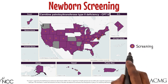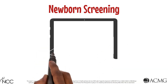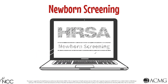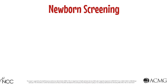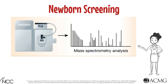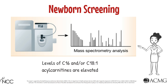Not all states in the United States provide newborn screening for CPT2 and CACT deficiency. A good resource for checking a state's newborn screening panel is the newbornscreening.hrsa.gov website. Screening for CPT2 and CACT deficiency is performed by examining levels of C16 and/or C18-1 acylcarnitines, which are elevated in these conditions.